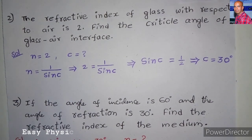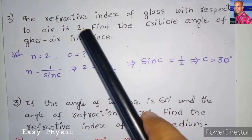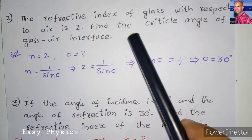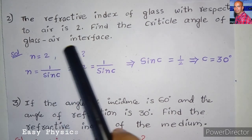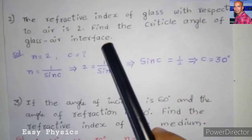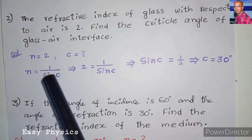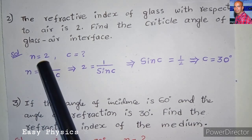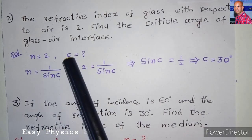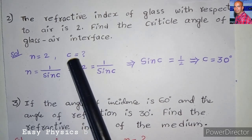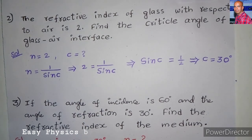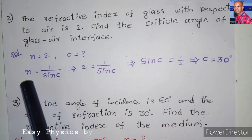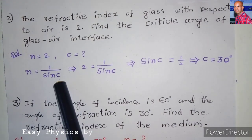Second problem: the refractive index of glass with respect to air is 2. Find the critical angle of the glass-air interface. The refractive index n = 2, and we need to find the critical angle C. The formula relating these two is n = 1/sin C.